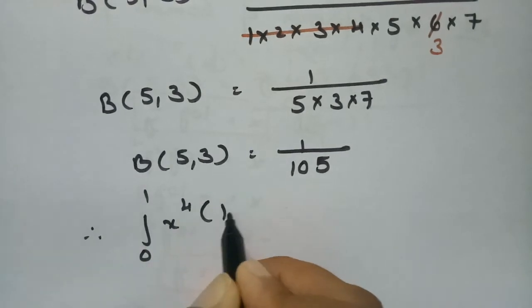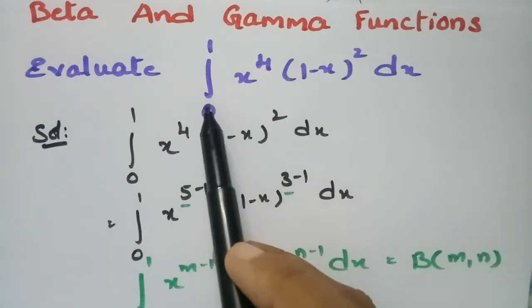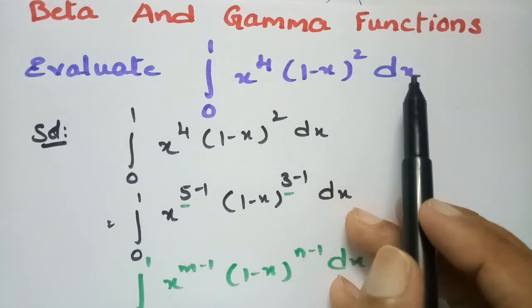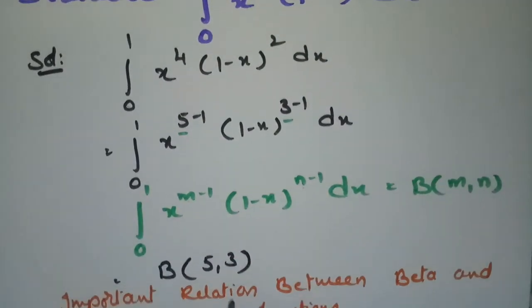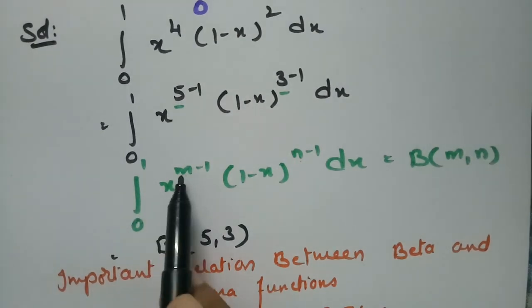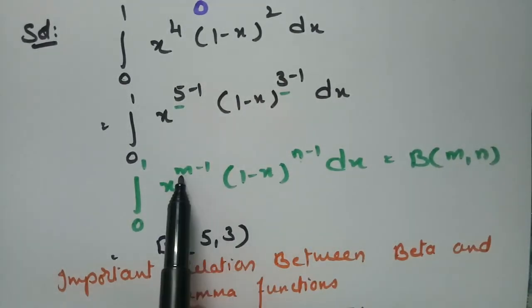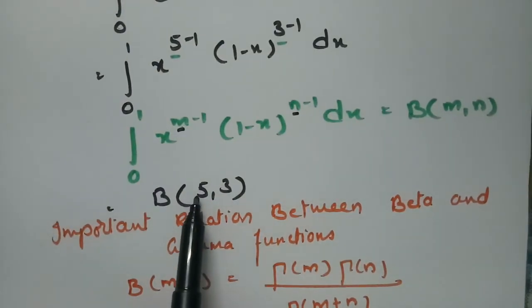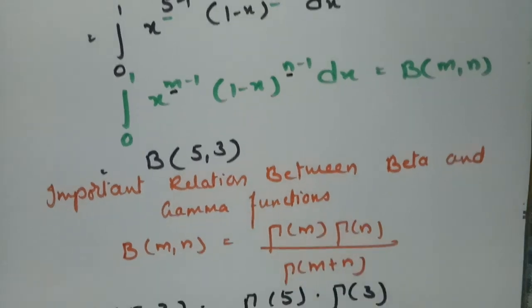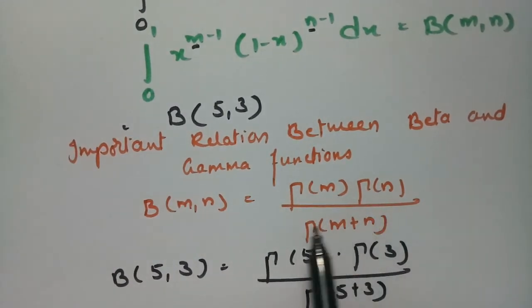So the original problem — integral 0 to 1 of x^4 (1 minus x)^2 dx — has 4 written as 5 minus 1 and 2 written as 3 minus 1. This is of the form of a beta function: integral 0 to 1 x^(m-1) (1 minus x)^(n-1) dx, written as beta(m, n), where m equals 5 and n equals 3, giving beta(5, 3).